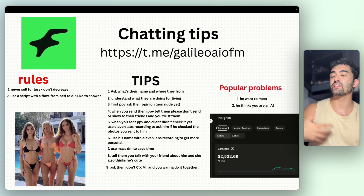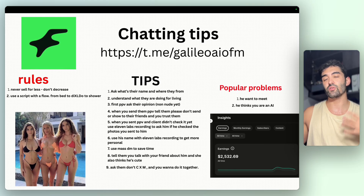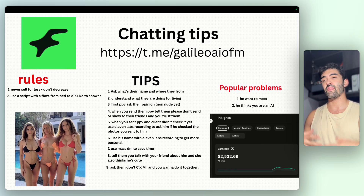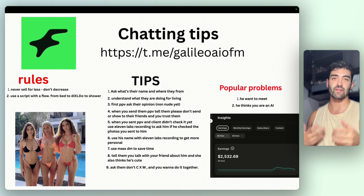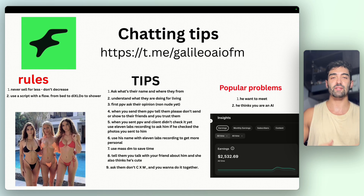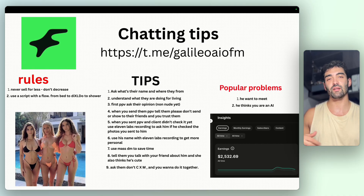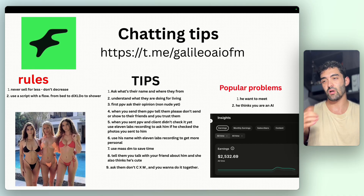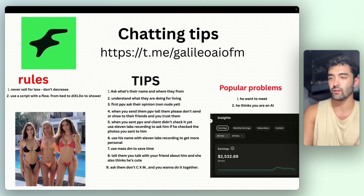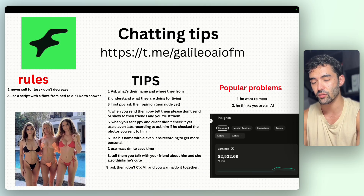Another tip: use mass DMs when you start your shift and there are no active chats. Send something very general like 'What are you doing?' to all your subscribers. People will respond and it gets conversations going. You can also use mass DMs to send PPVs, which can be very effective.